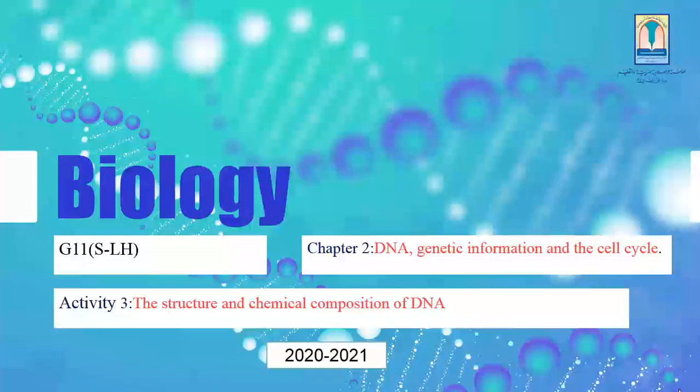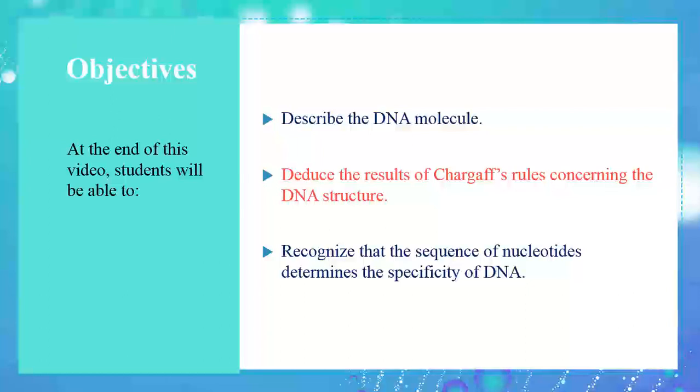Welcome again, Grade 11 students. We are still discussing Chapter 2: DNA, genetic information in the cell cycle. We will be starting with the most important lesson — Activity 3: the structure and chemical composition of DNA. At the end of this video, you will be able to describe the DNA molecule, deduce the results of Chargaff's rule concerning DNA structure, and recognize that the sequence of nucleotides determines the specificity of DNA.